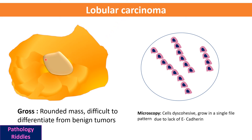Lobular carcinoma grossly shows a rounded mass which is difficult to differentiate from benign tumors. Microscopically, the cells are discohesive and grow in a single file — also called the Indian file pattern — due to lack of E-cadherin.